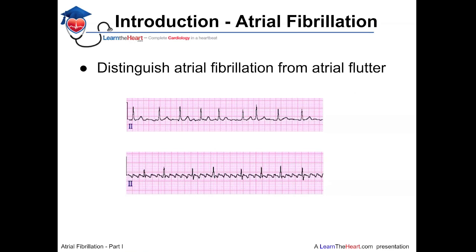It's very important to distinguish atrial fibrillation from a very similar arrhythmia called atrial flutter. Atrial fibrillation manifests as a lack of defined P waves on the ECG and an irregularly irregular QRS complex. We can see coarse atrial fibrillation activity but no definite P waves. In contrast, atrial flutter does have definite P waves, frequently in a classic sawtooth pattern.